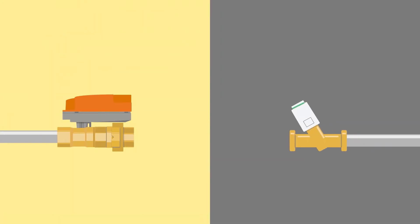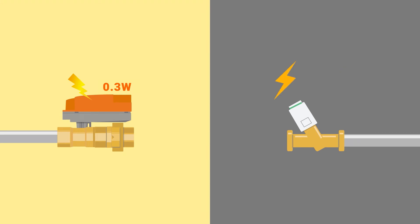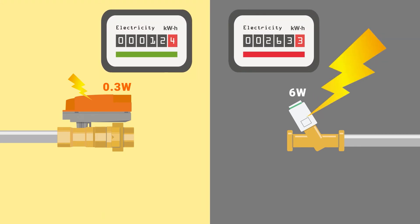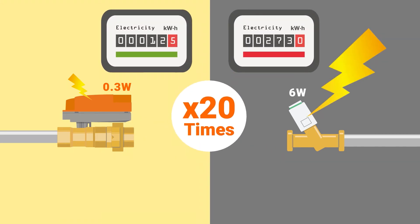The brushless DC motor runs only at 0.3 watts, which is up to 20 times less power than the thermic actuator.